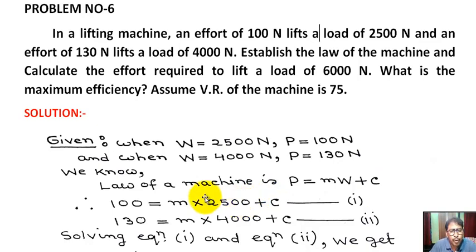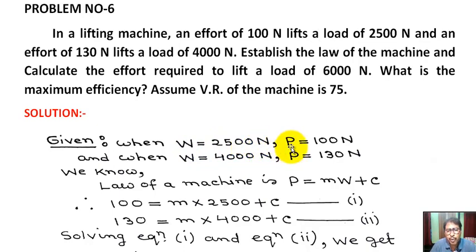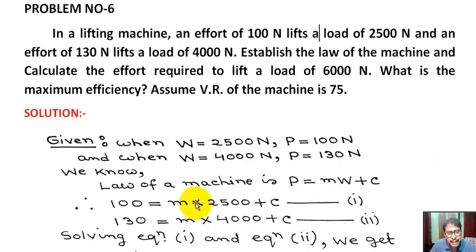Now we substitute the first values into this equation. In the first case, W equals 2500 Newton and P equals 100 Newton. Therefore: 100 equals m times 2500 plus C.